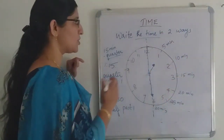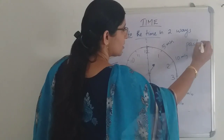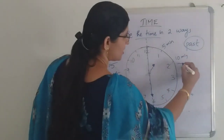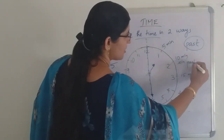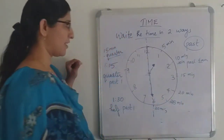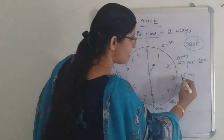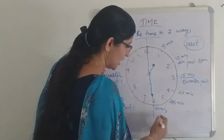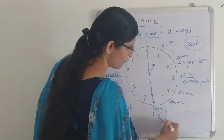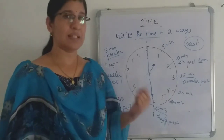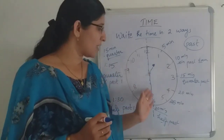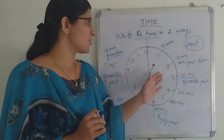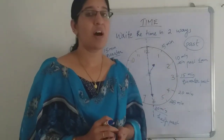So the method is: if the minute hand is in the right half of the clock from 5 minutes to 30 minutes, write the minutes first, then 'past,' then the hour. If it is 15 minutes, write 'quarter past.' If it is 30 minutes, write 'half past.' Just look at the minute hand only.